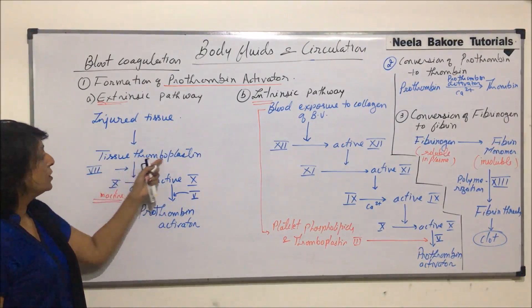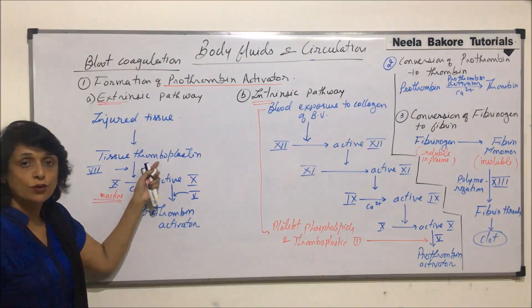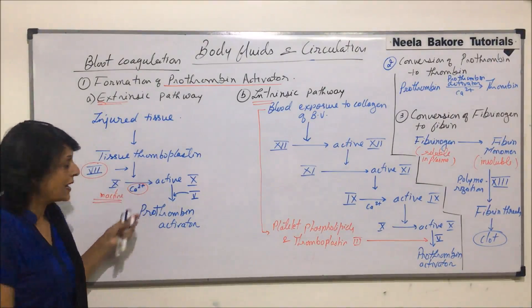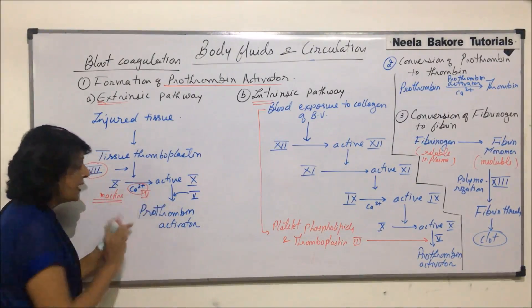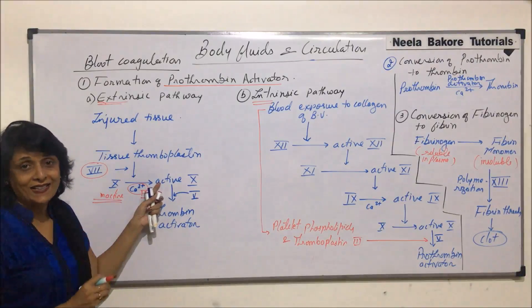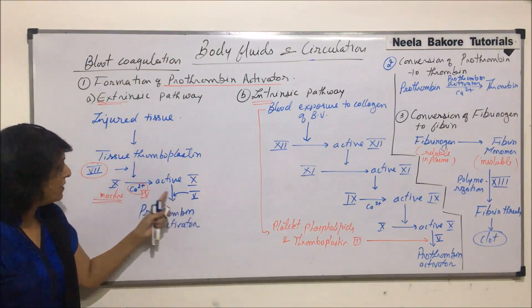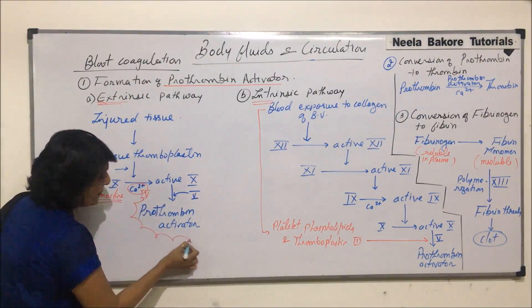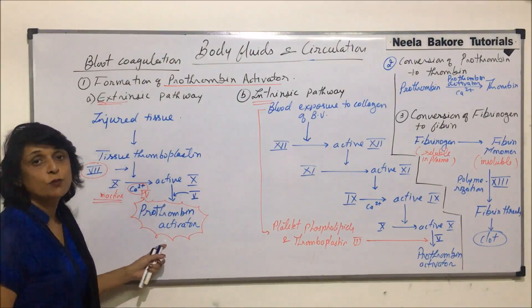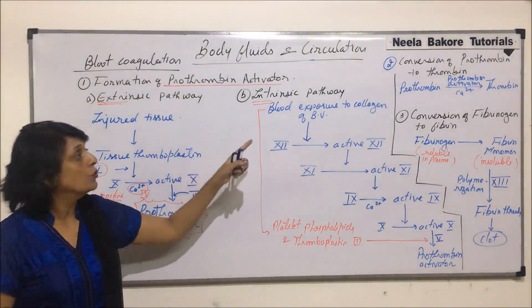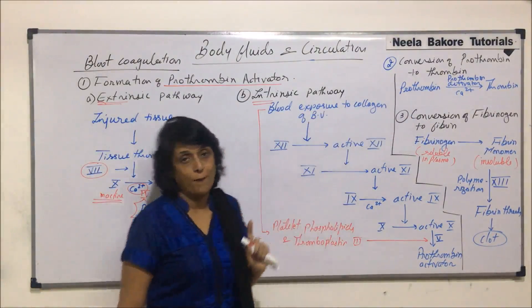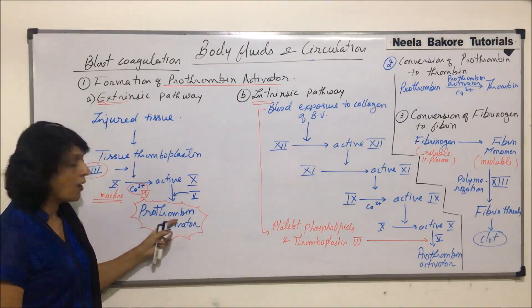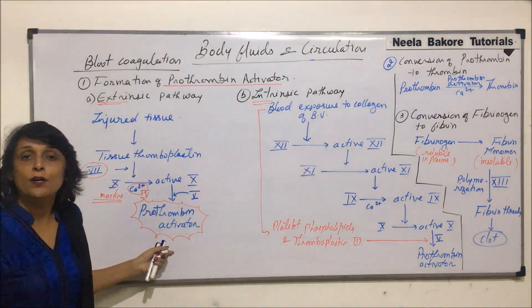What is required is tissue thromboplastin from the injured tissue, factor seven, and calcium — which is factor four — and the tenth factor gets activated. Now, in the presence of factor five, this active tenth factor gets converted into prothrombin activator. This substance will trigger step number two, the conversion of prothrombin to thrombin. This pathway is known as the extrinsic pathway.